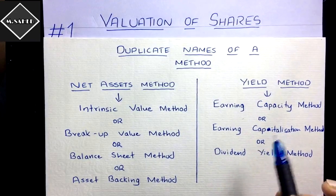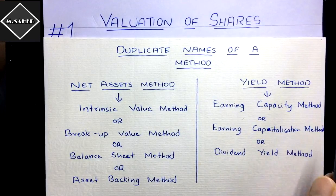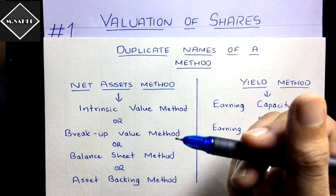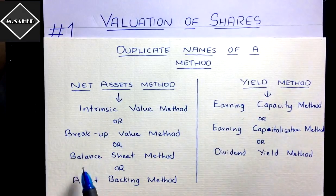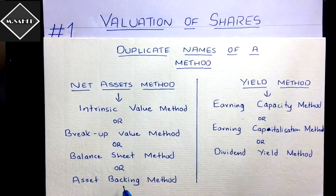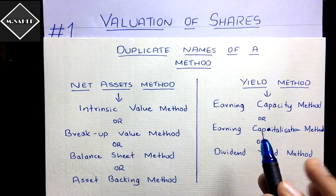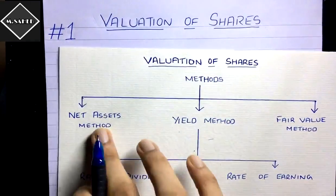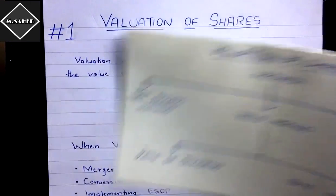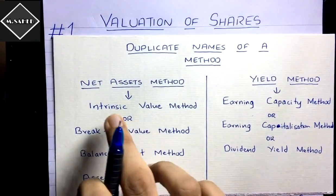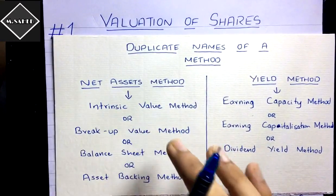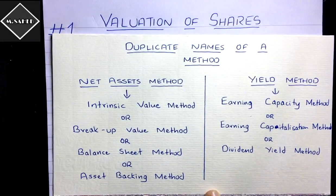Understanding the concept helps you recognize these names: yield is based on future earnings and returns, so 'earning' and 'dividend' in the name make sense. Check your textbook for all duplicate names. The Fair Value Method has only one name. In BCom and BBA exams, 'intrinsic value' is most commonly used in question papers. Be careful and go through these names once so you don't get confused in exams.